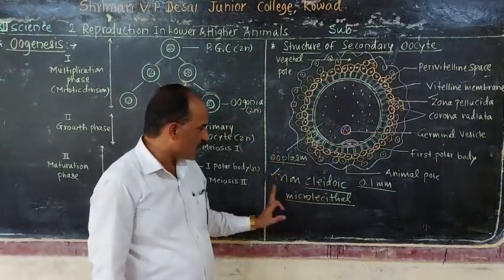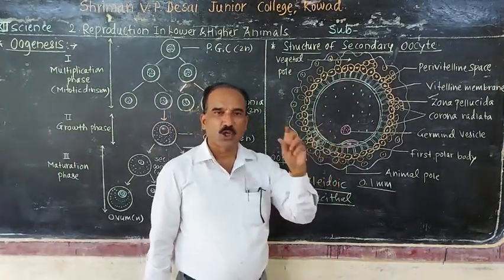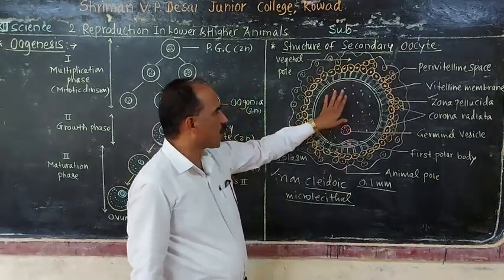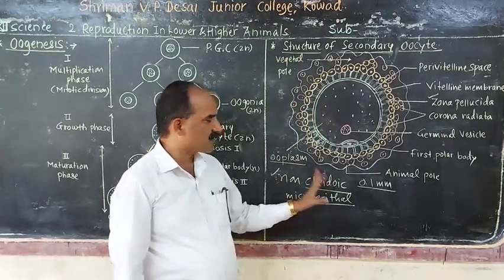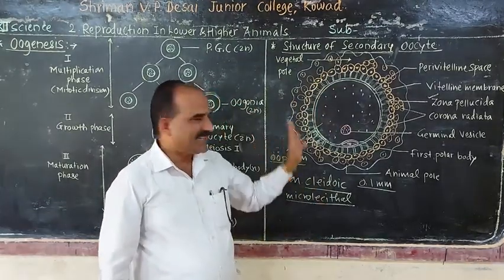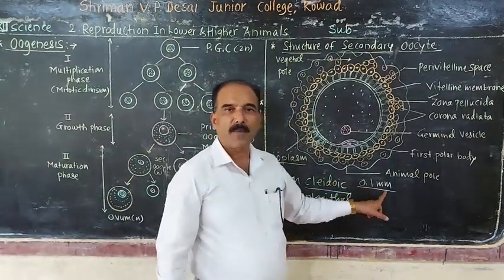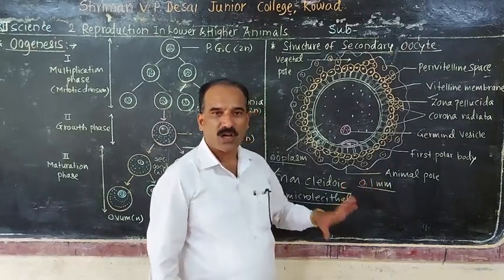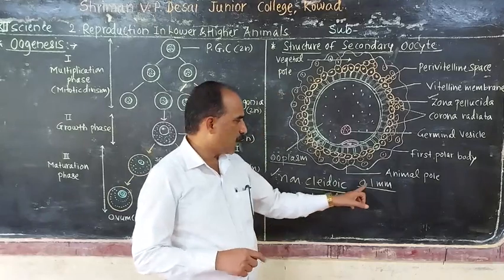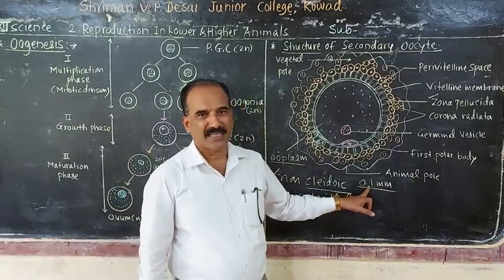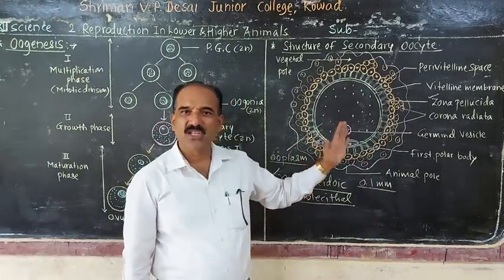The secondary oocyte is microlecithal, meaning it contains yolk in only a small amount. It is spherical in shape and measures about 0.1 mm in diameter, or 100 microns. It is a non-motile, haploid structure.